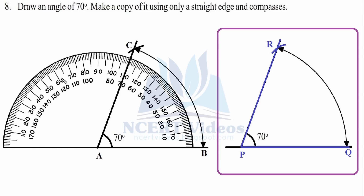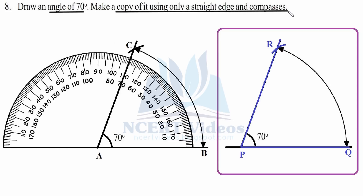Question 8: Draw an angle of 70 degrees using the protractor — this is straightforward. Now make a copy of it using only a straight edge and compasses. Make another line BQ, then from A open your compasses and draw an arc connecting C and B. With the same radius, draw an arc on the new line to mark R and Q. Open the radius from B to C, and from Q draw an arc — wherever it cuts is point R. That is how you copy any angle.